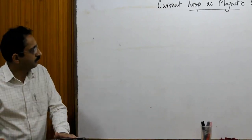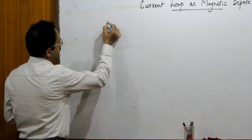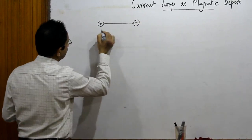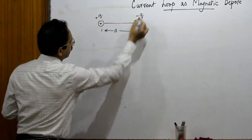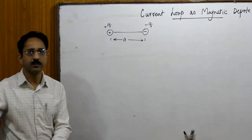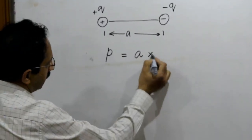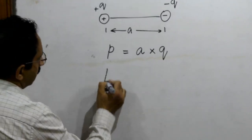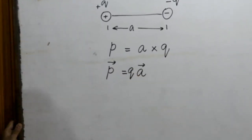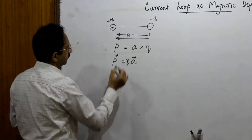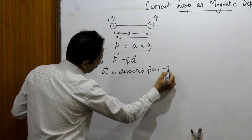The concept of a magnetic dipole is related to an electric dipole. We define an electric dipole as follows: if we have a positive charge separated from a negative charge by a distance A — say this is +Q and -Q — then we define a quantity called electric dipole moment P, given by the distance between charges multiplied by Q. P is a vector quantity: P = QA (vector), where the direction of A is taken from the negative charge towards the positive charge, i.e., from -Q to +Q.